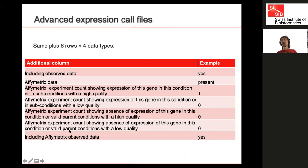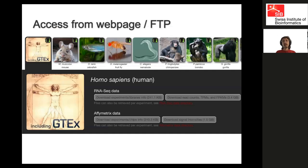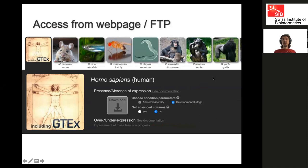In the advanced file you have this information times the four data types, so you have a lot of additional columns, which you can parse using tools like grep, or import into R, or program your own Python function. Nothing is hidden. These files you can get from the web page, which links to the FTP, or directly to the FTP server. For each species you can click and get the process data or the present/absent files, choosing whether you want developmental stage and whether you want the advanced columns. There is always documentation available.